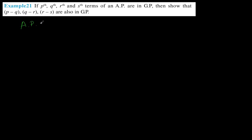The question says: if the Pth, Qth, Rth, and Sth terms of an AP are in GP, then show that P-Q, Q-R, and R-S are also in GP. We have an arithmetic progression, so let's assume the first term is A and the common difference is D. The Pth term will be A plus (P minus 1) times D.